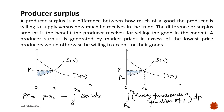The producer receives p0·x0. The difference between these two is noted by the shaded region, known as producer surplus.